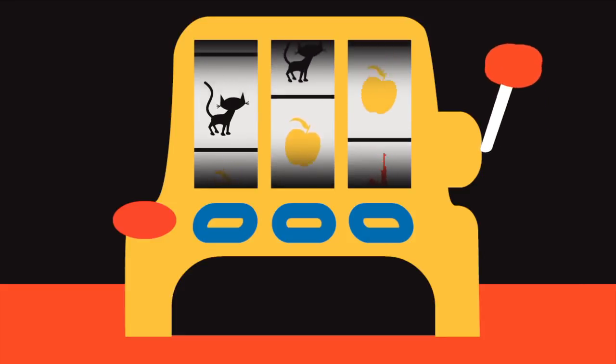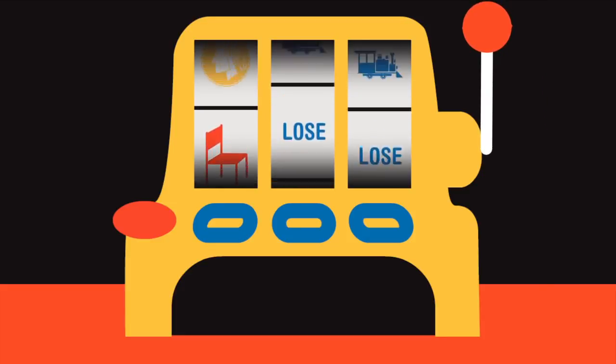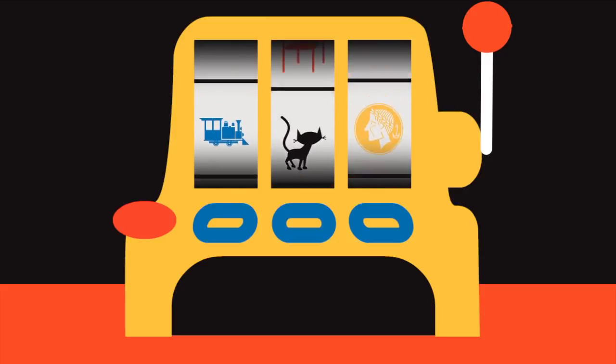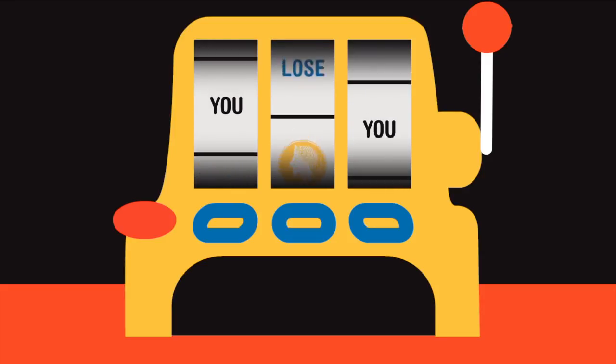This is called the gambler's fallacy. Our assumption that probability changes depending on past results. And this may explain why casinos make so much money.